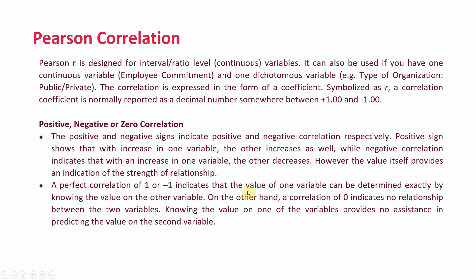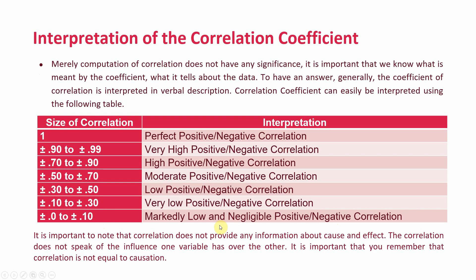A perfect correlation of 1 or minus 1 indicates that the value of one variable can be determined exactly by knowing the value of the other variable. On the other hand, a correlation of 0 indicates no relationship between two variables — knowing the value of one variable provides no assistance in predicting the value of the other.